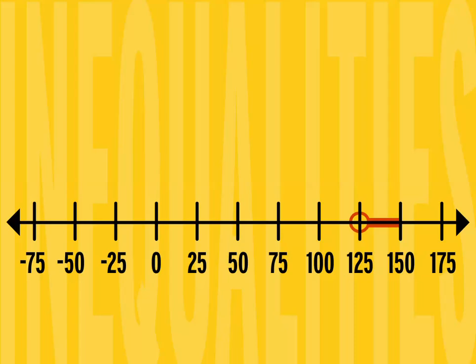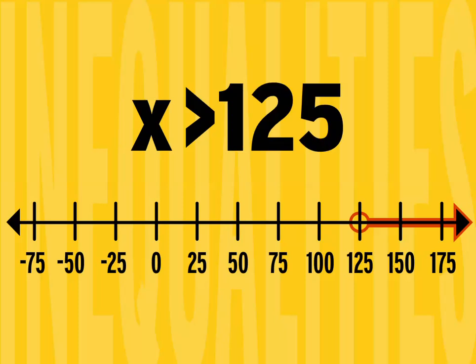We can graph our inequality on a number line this way. See, the red line starts at 125 and points upward into infinity. That means x is greater than 125. If x were greater than or equal to 125, we'd just fill in the circle.